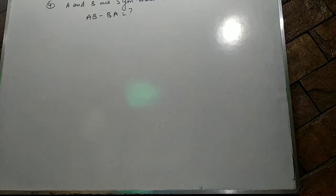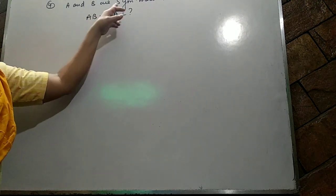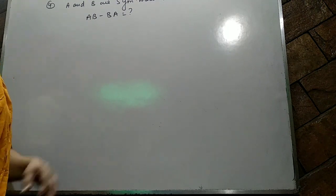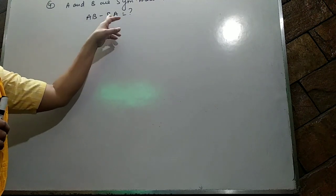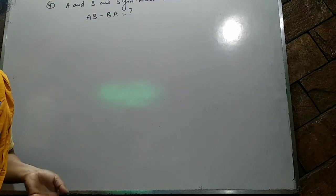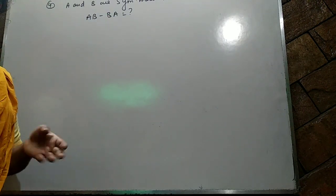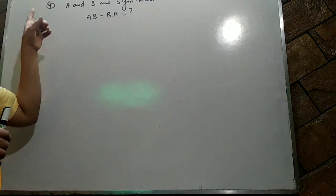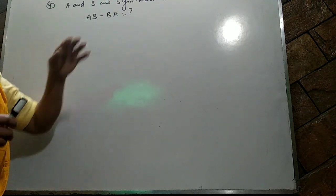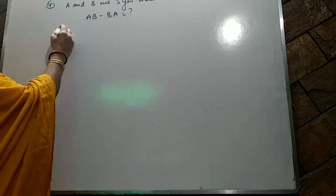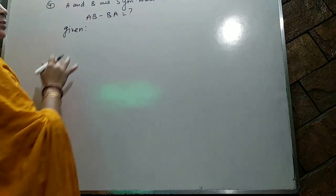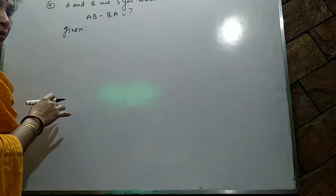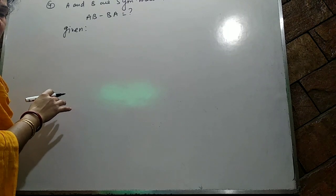Question number four: A and B are symmetric matrices. We have to check what type of matrix AB minus BA is — whether it is a symmetric matrix or a skew-symmetric matrix. If A and B are symmetric, what does that mean?